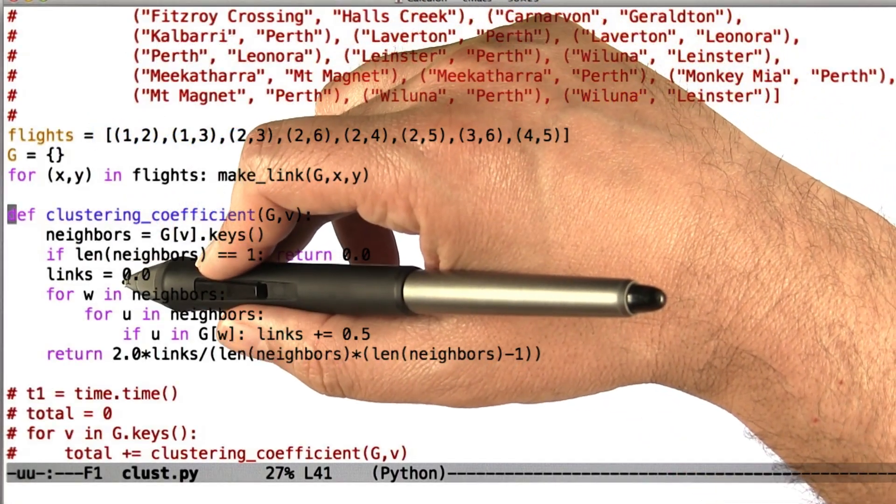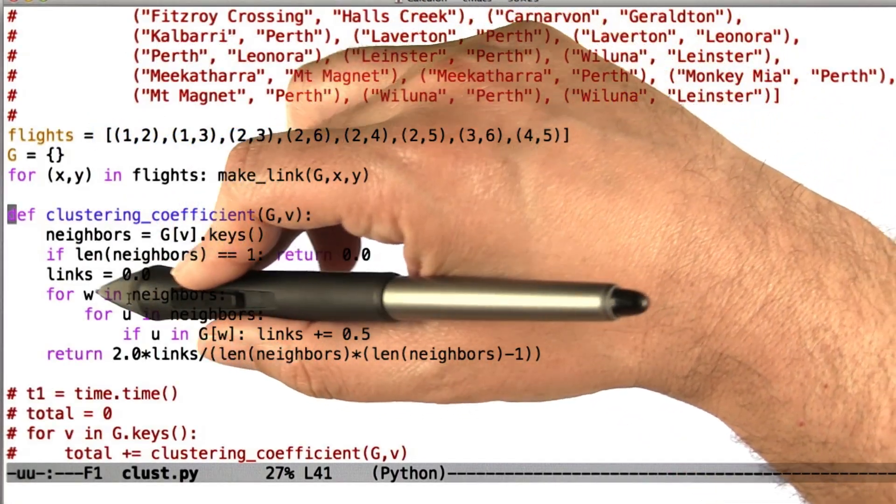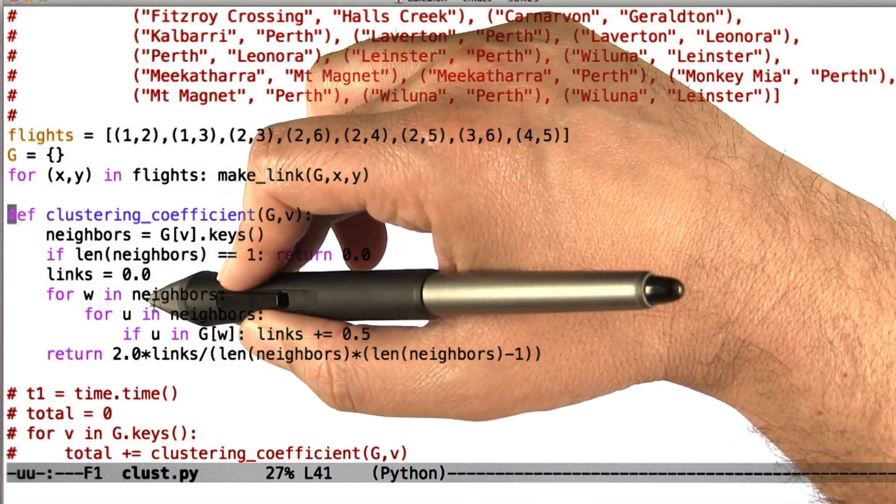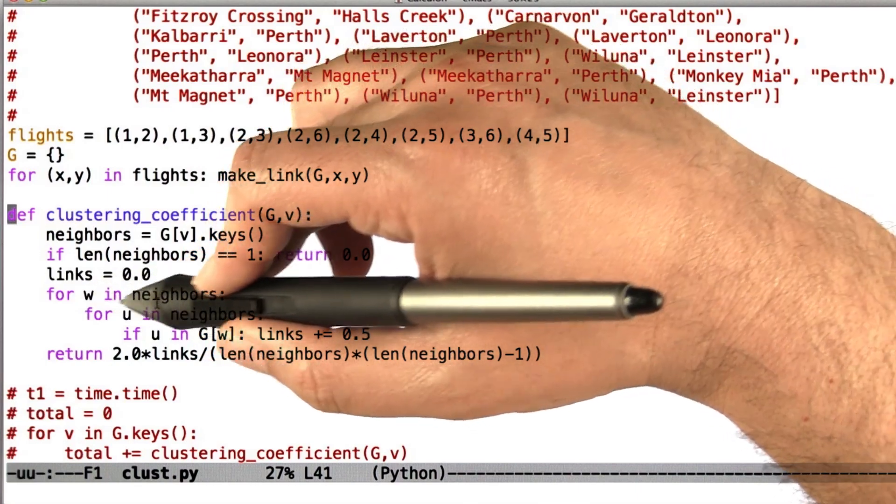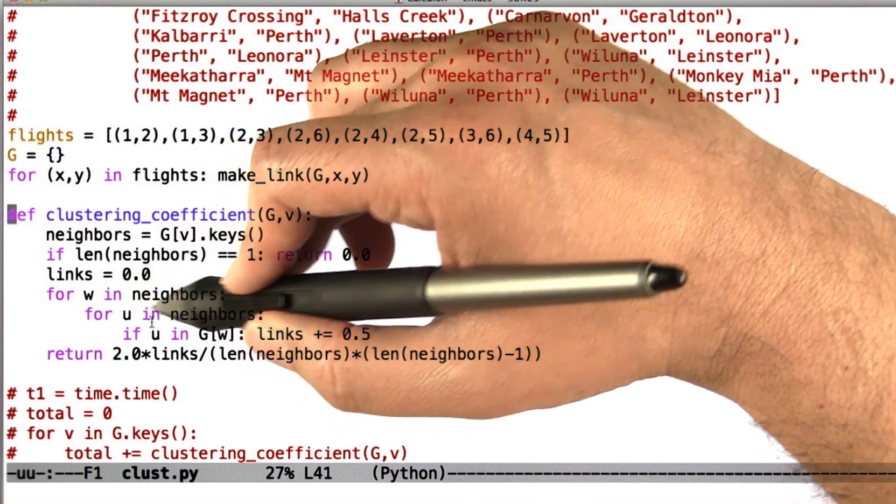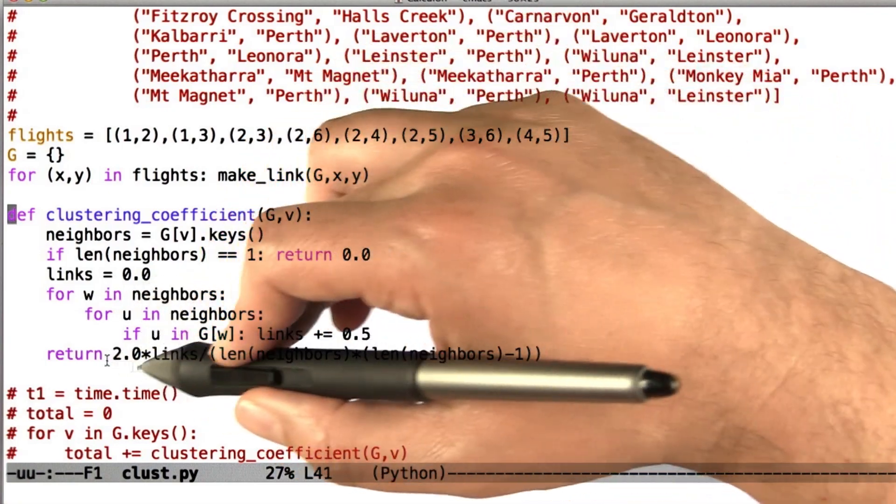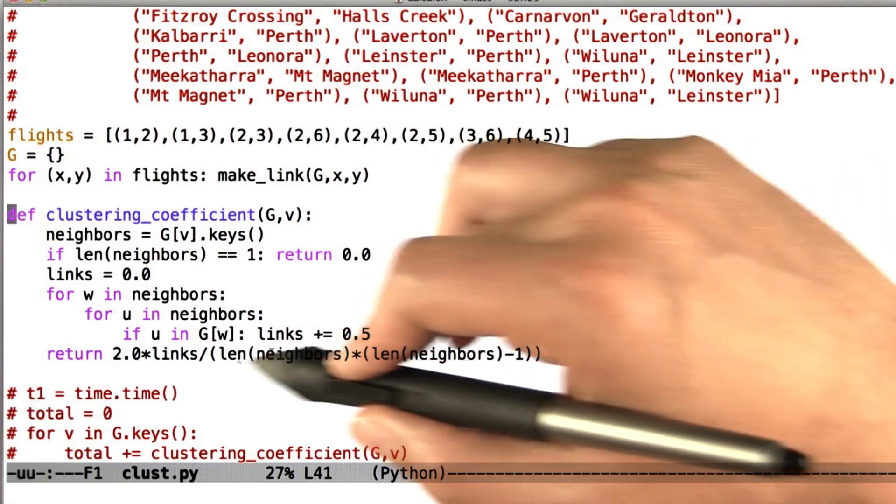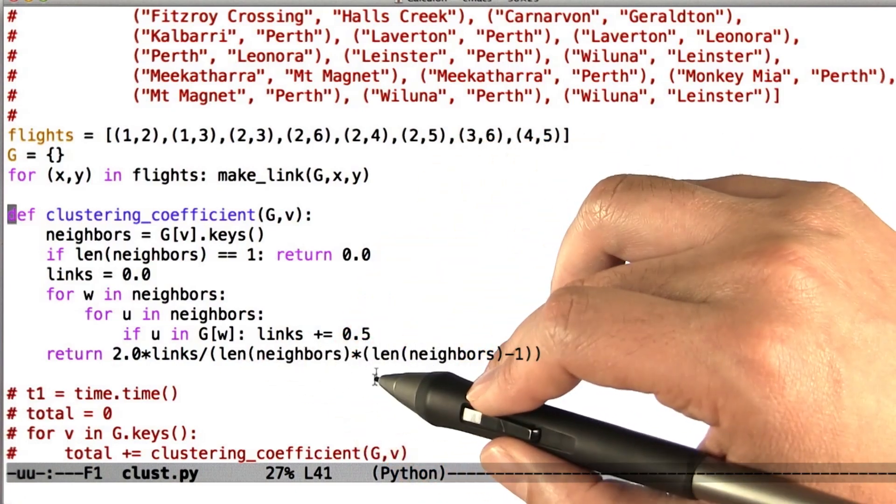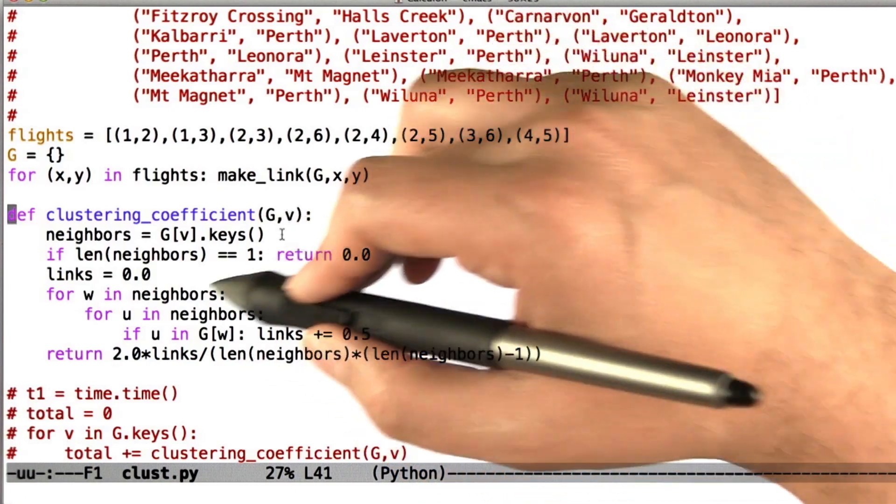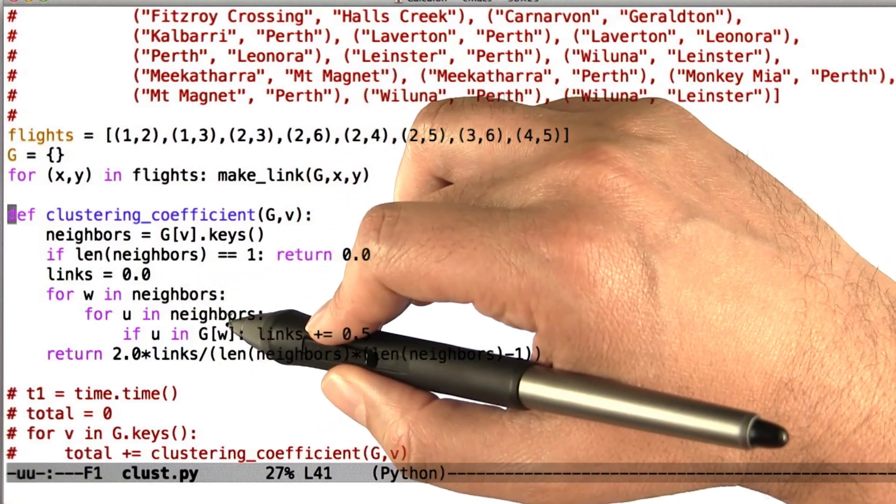Just to remind you, here's some code for computing the clustering coefficient of a graph with respect to a particular node v. Computing the clustering coefficient involves looking at all the neighbors of v, going through them one by one, and looking at the pairs of neighbors. For each pair of neighbors, it does a calculation to compute how connected it is and then returns a measure of how densely connected the neighbors are.